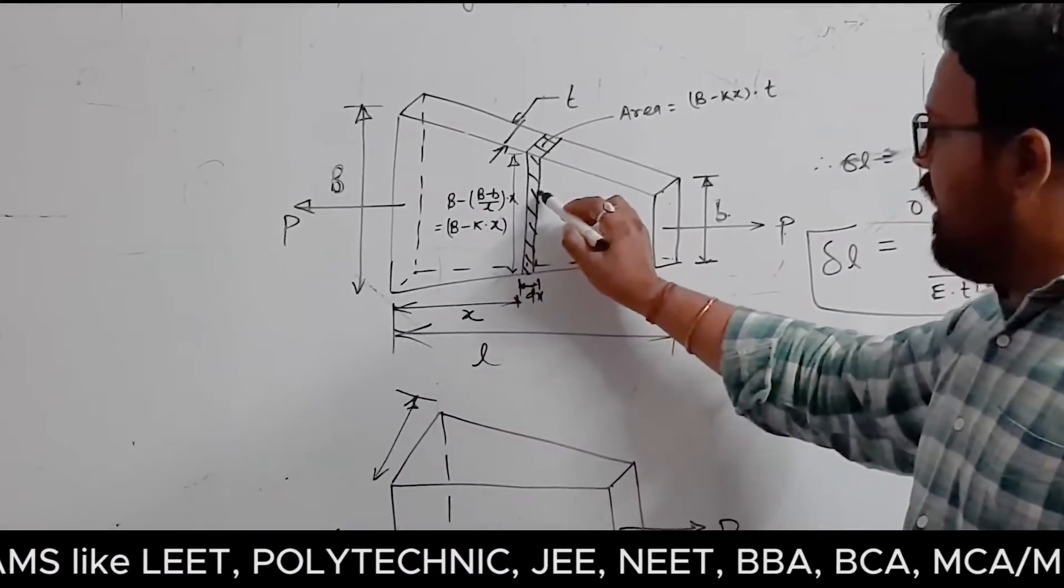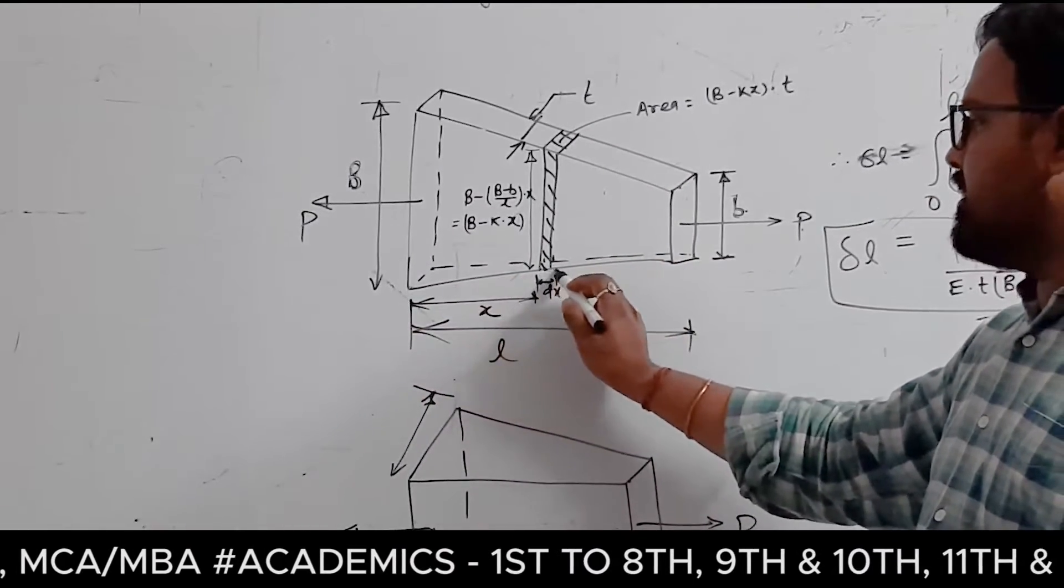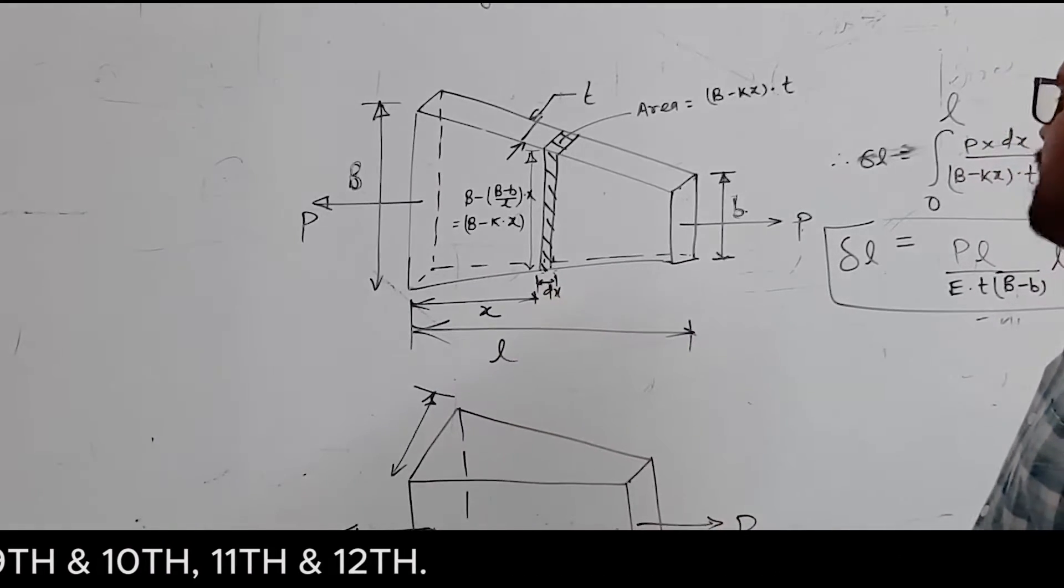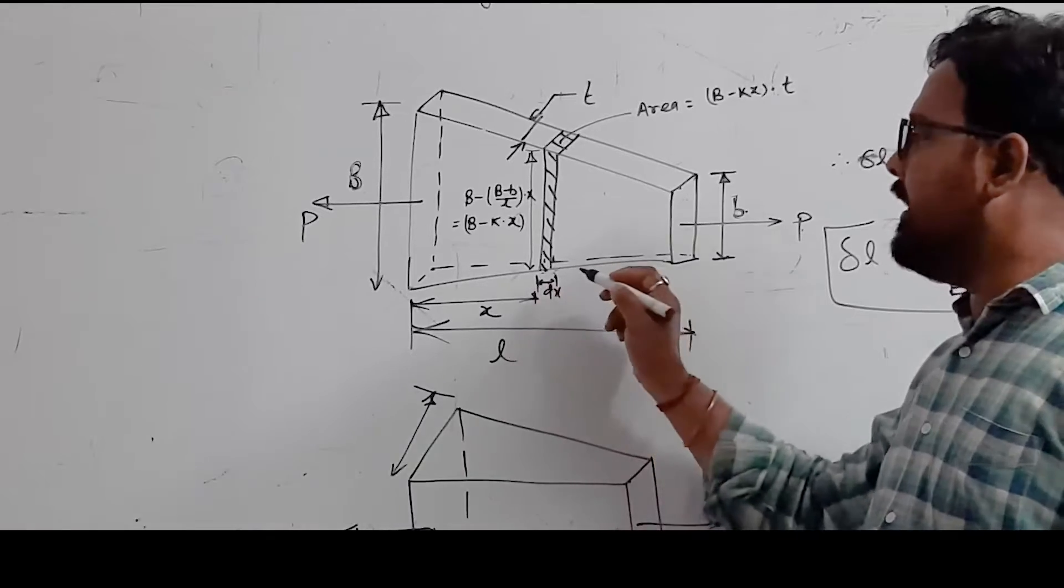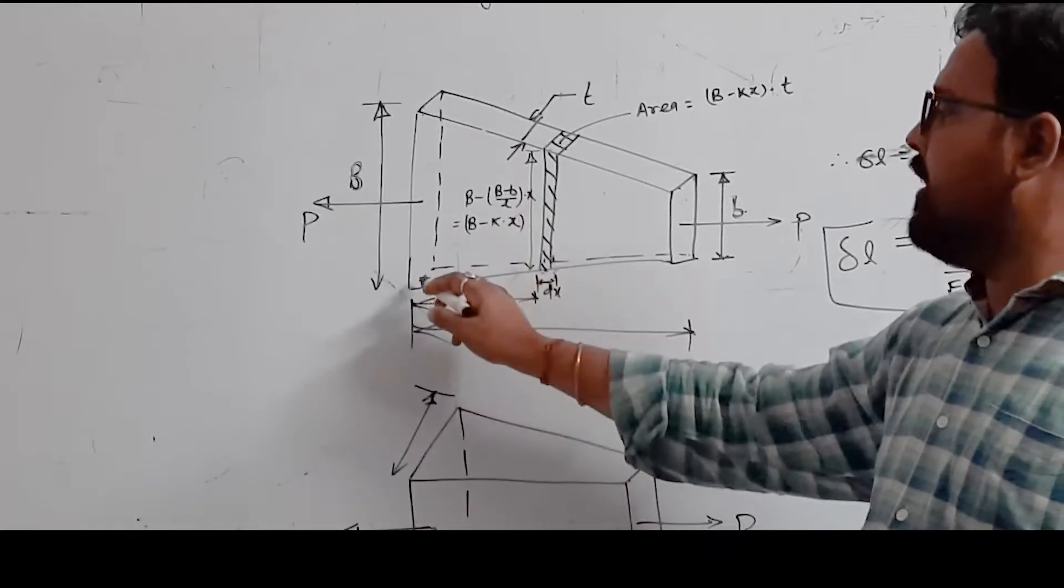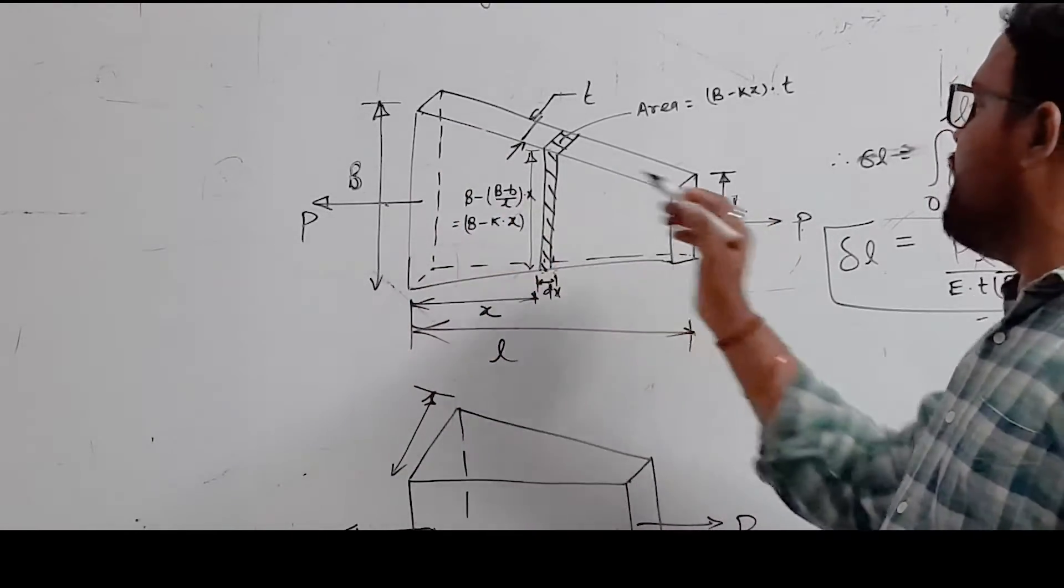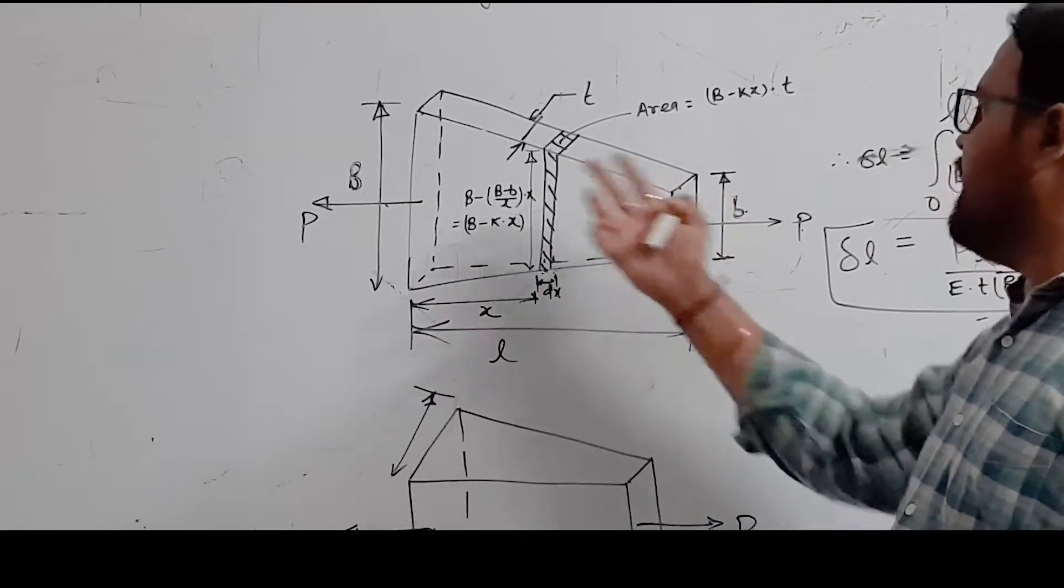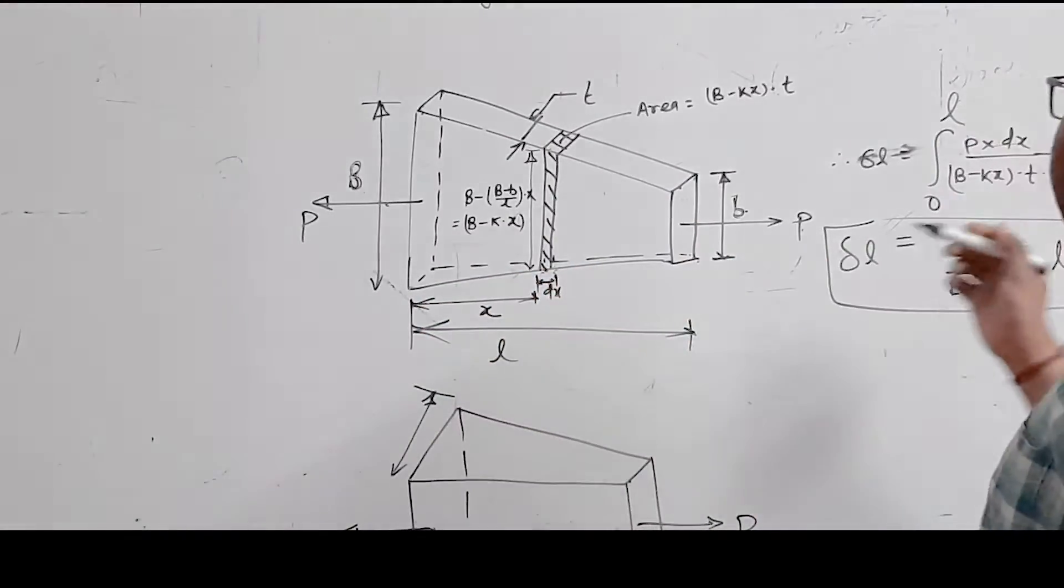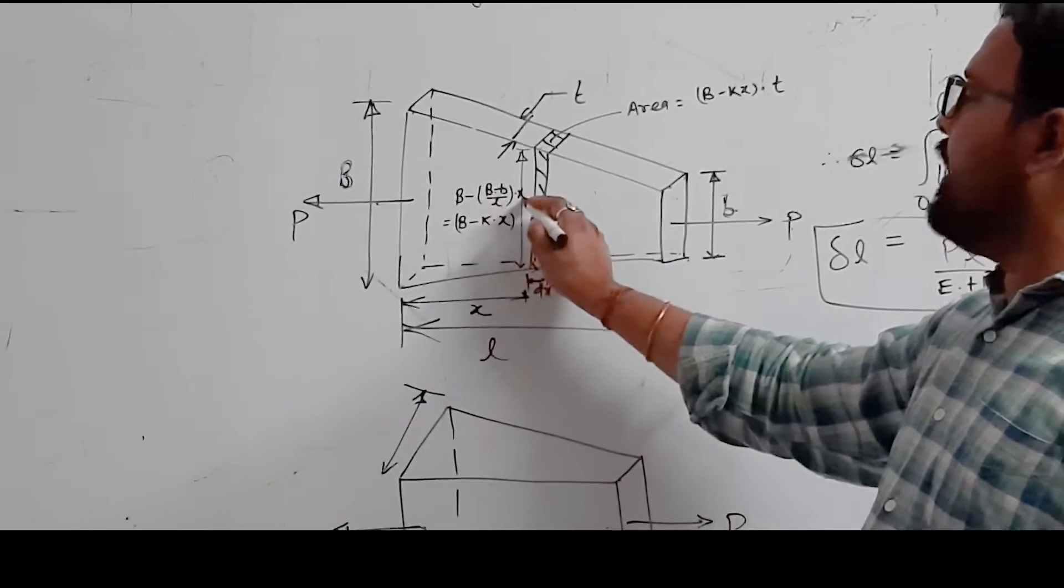We will take an elemental strip which is at distance x from the larger end. Basically, thickness is constant and length is dx. So we will find the width here. The logic is: width is B at the start, then we find the difference. Capital B minus small b over L, so unit length is B minus b by L. So at x length, it's B minus (B minus b by L) times x.